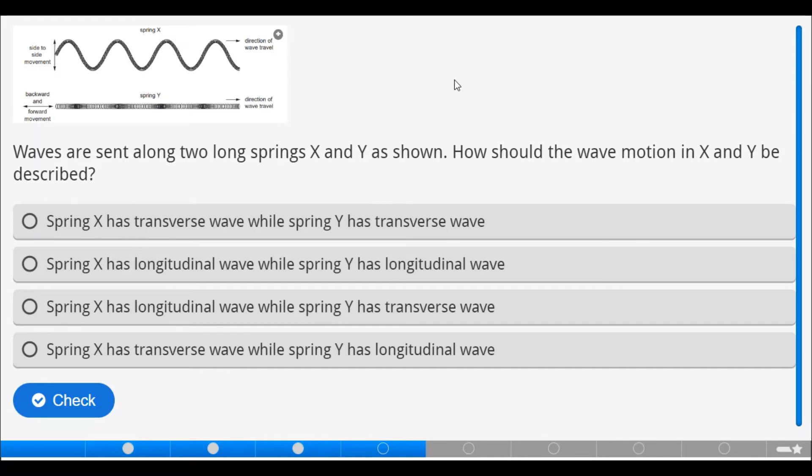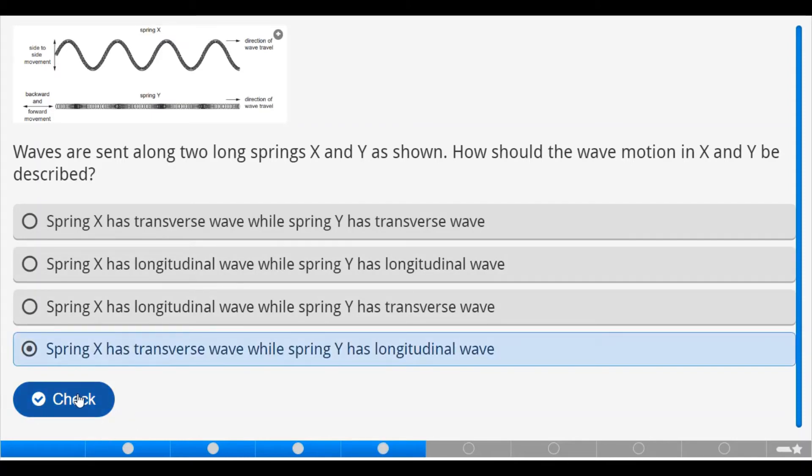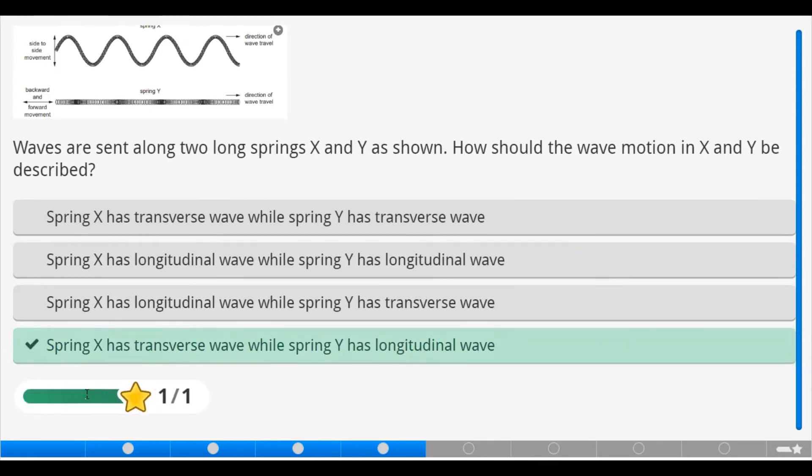Let's check whether it's available as part of the options. X is transverse, while Y is longitudinal. So, we have it. Let's pick and check. That's correct.